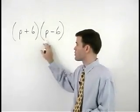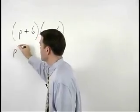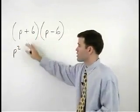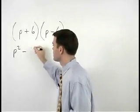So take the product of the first terms, P times P, which is P squared, plus the product of the outer terms, P times negative 6, which is negative 6P.